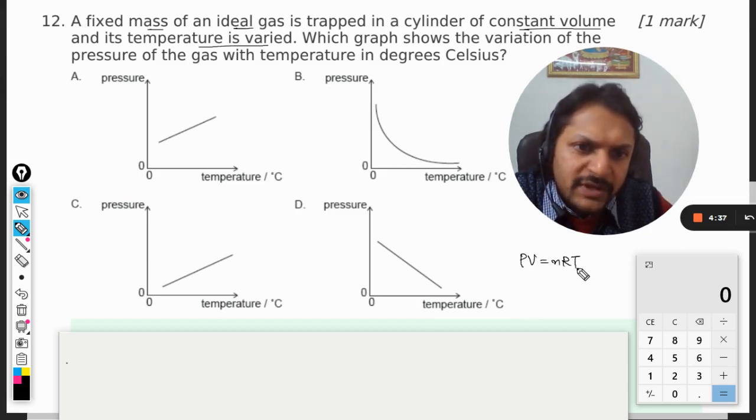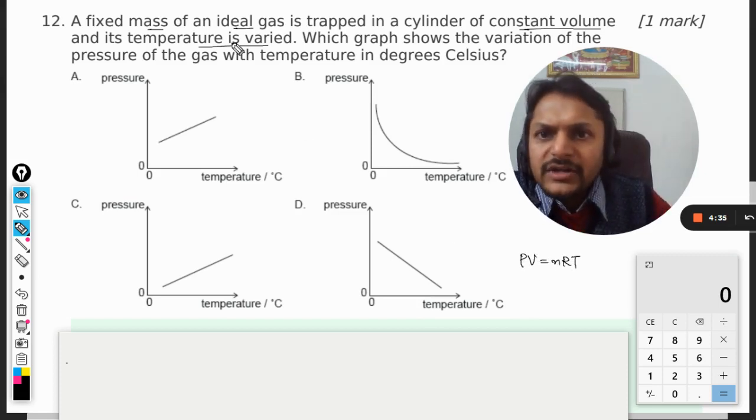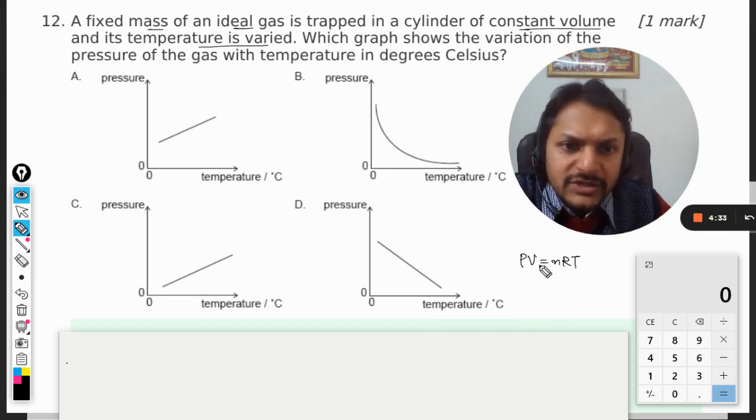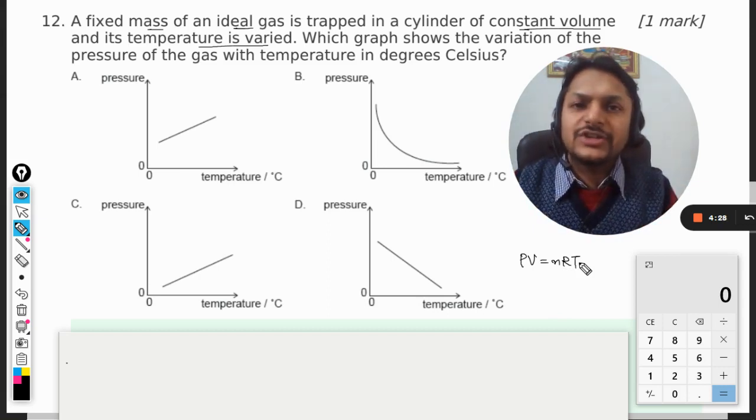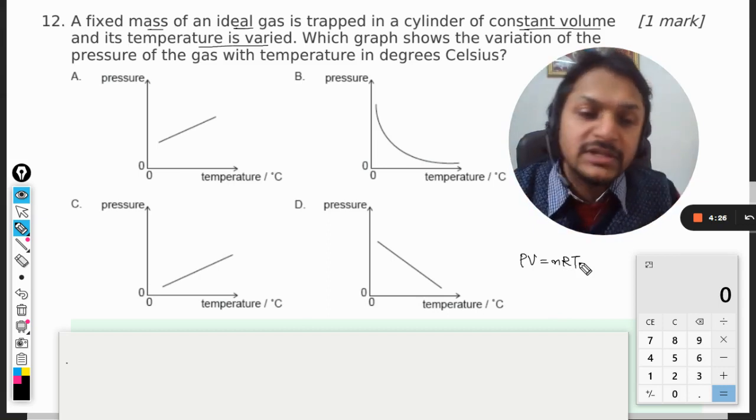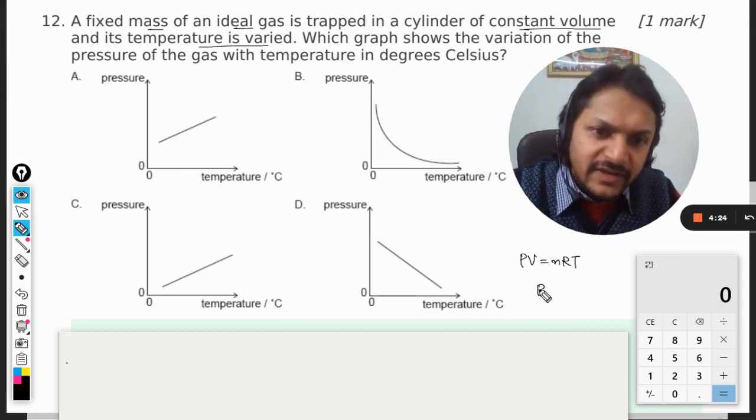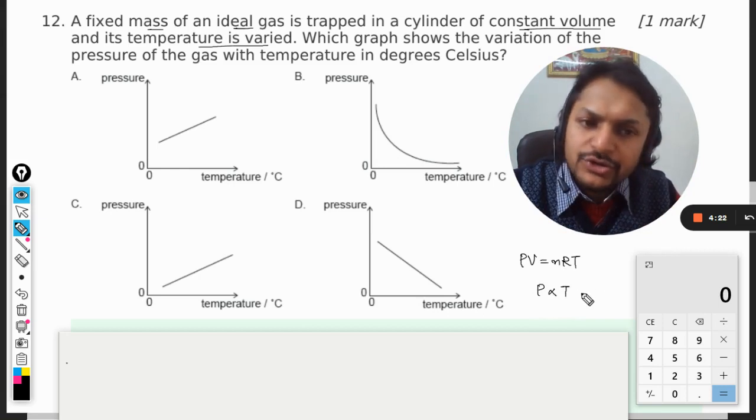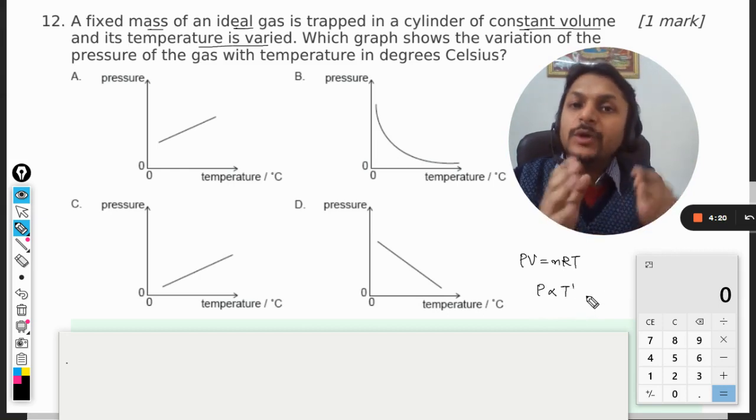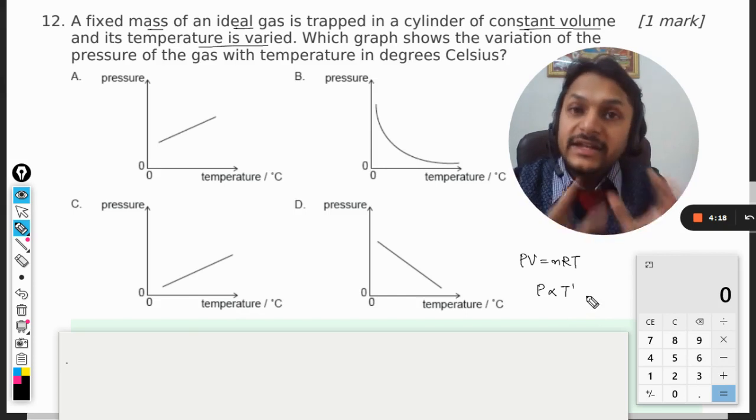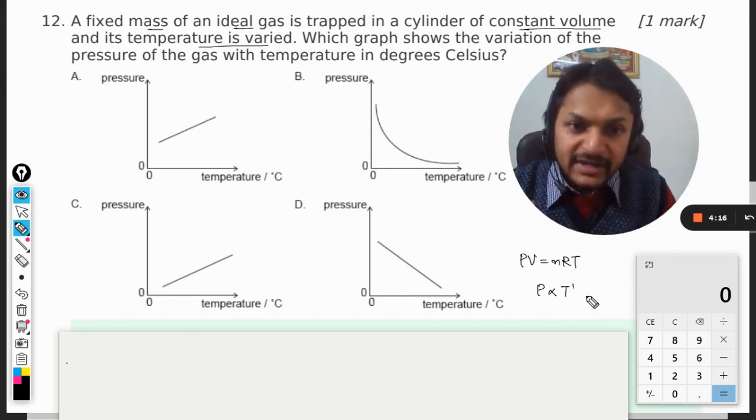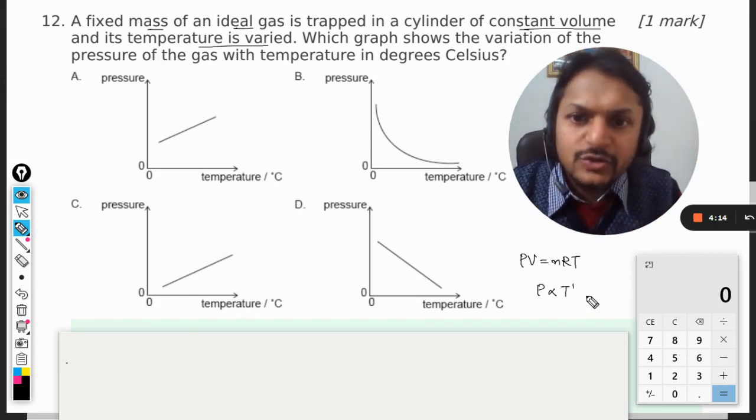It's an ideal gas, so we will first think about the ideal gas equation only: PV = nRT. Now it is given that the volume is constant, n is constant, and R is constant. When everything else is constant in the equation and there are only two variables, we can say that pressure is directly proportional to T, and it is T raised to power 1, so it is a linear variation. That's why it is going to be a straight line.